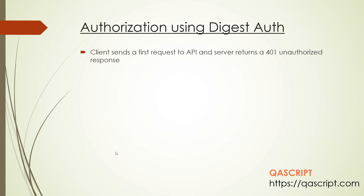In this type of authorization, the client sends a first request to the API, and when the server receives this request it returns a 401 unauthorized response. Now you might ask: if it is not able to authorize, then how does it work? Because it is returning a 401 error code, which means the authorization was not successful.